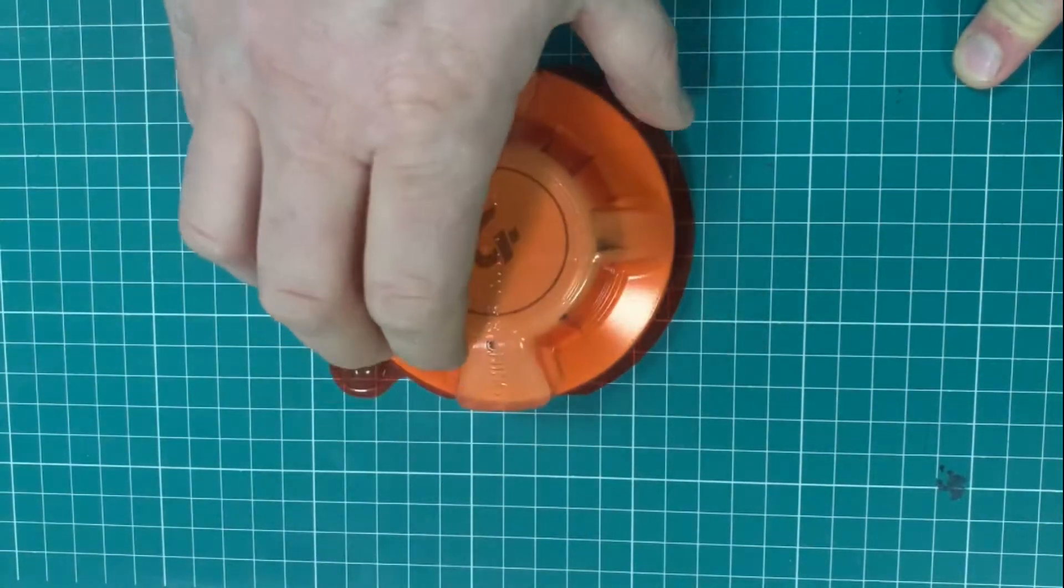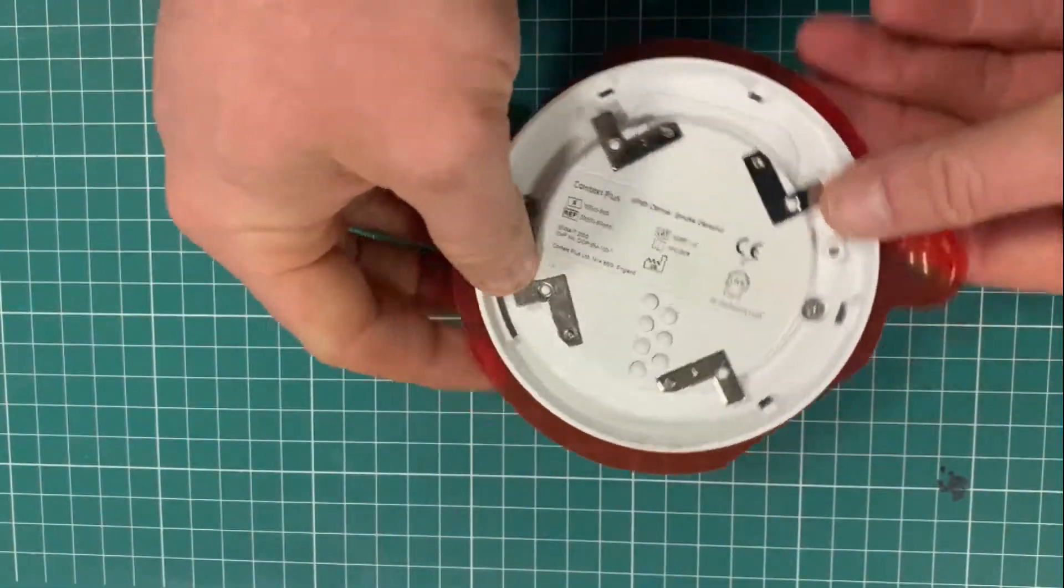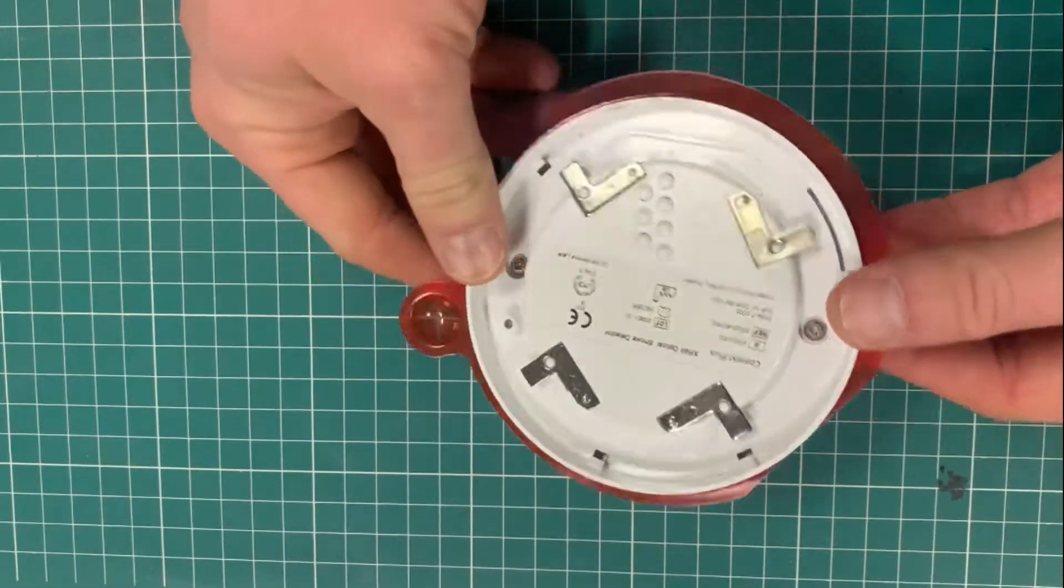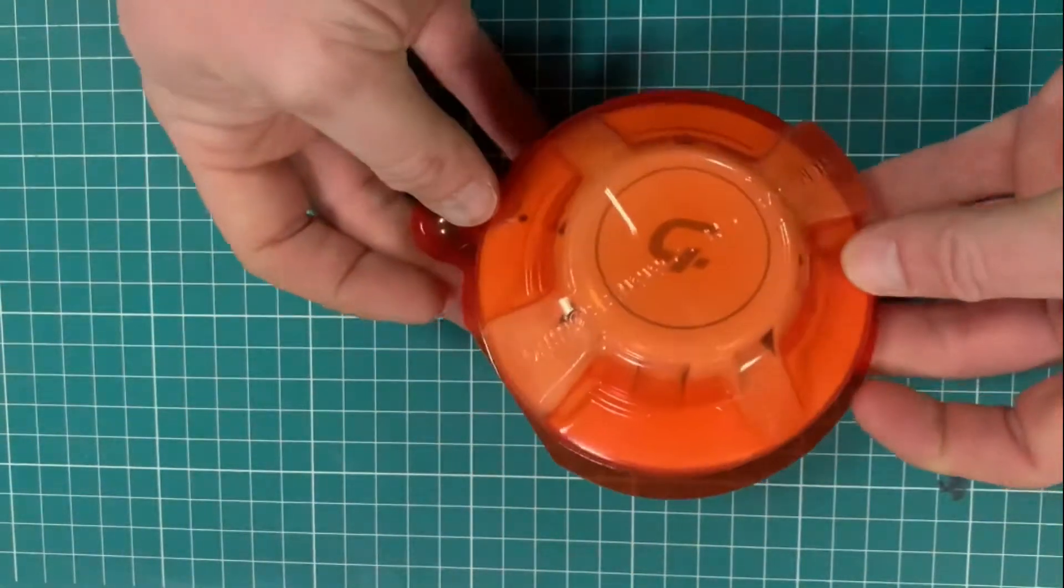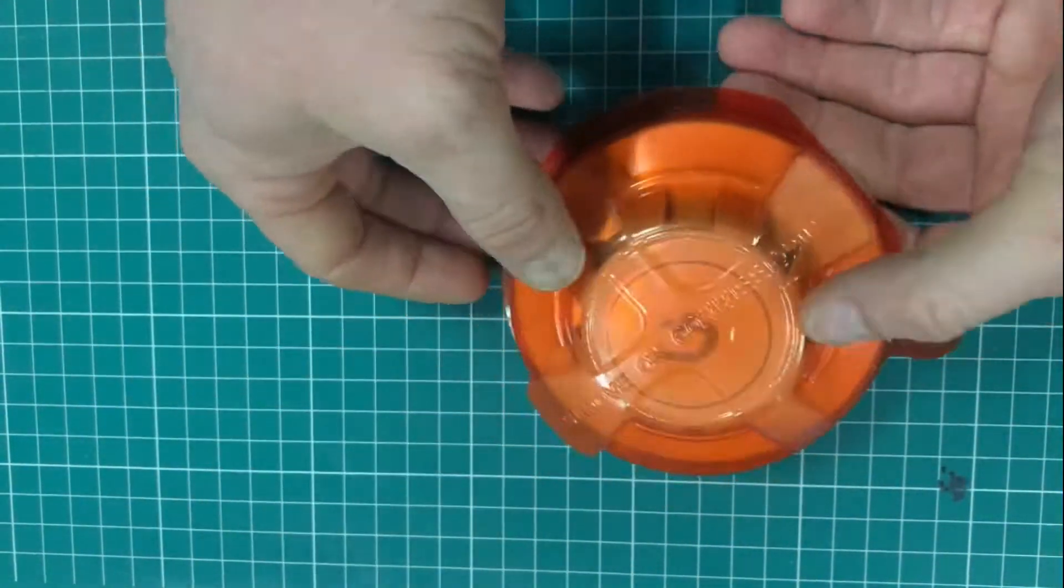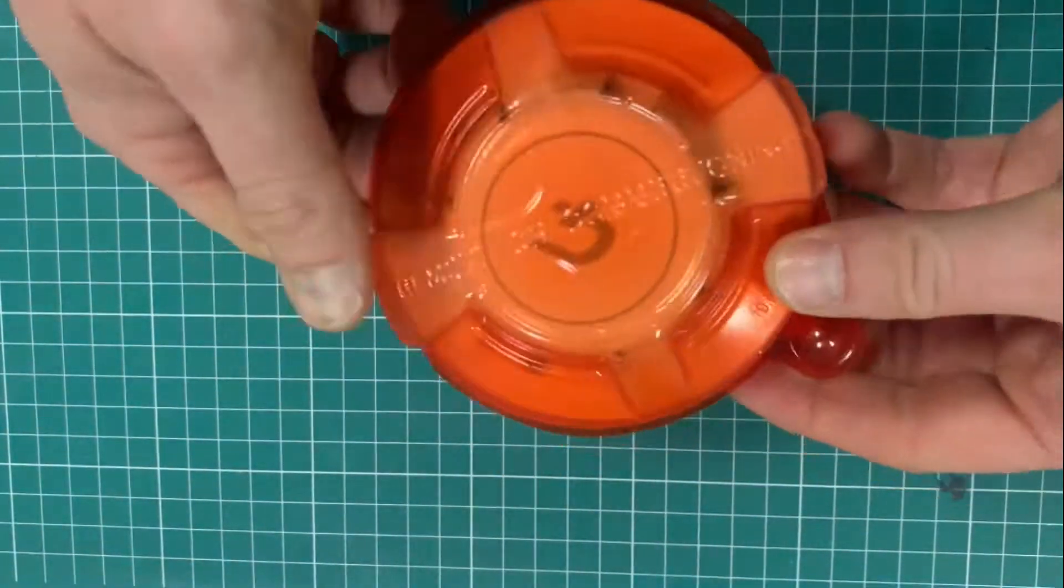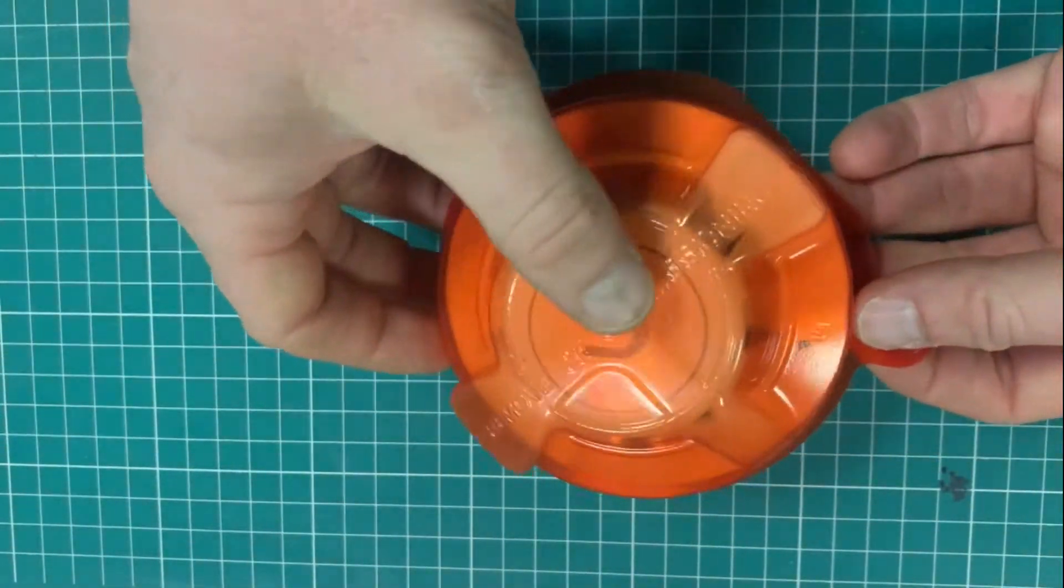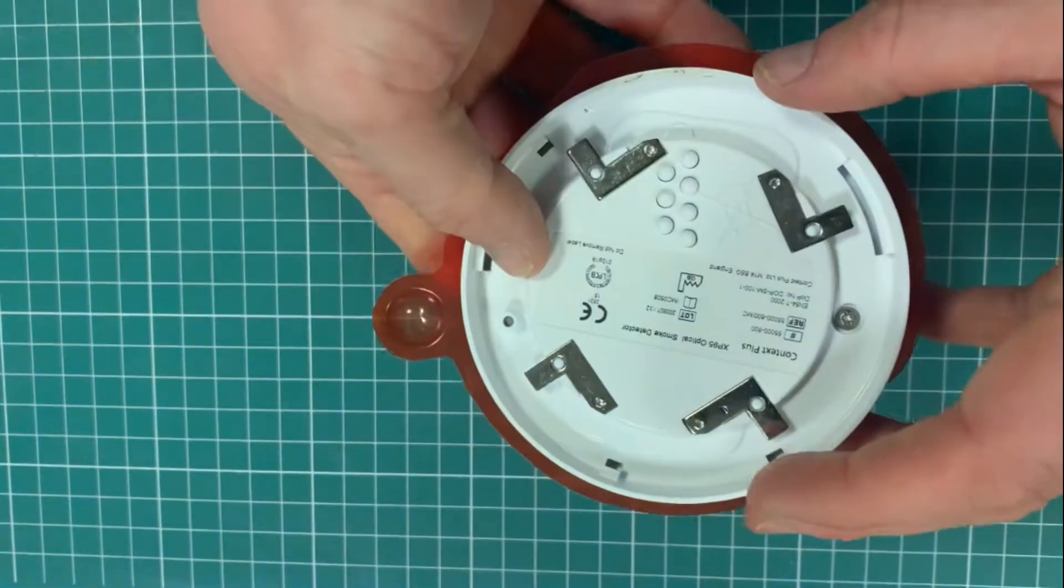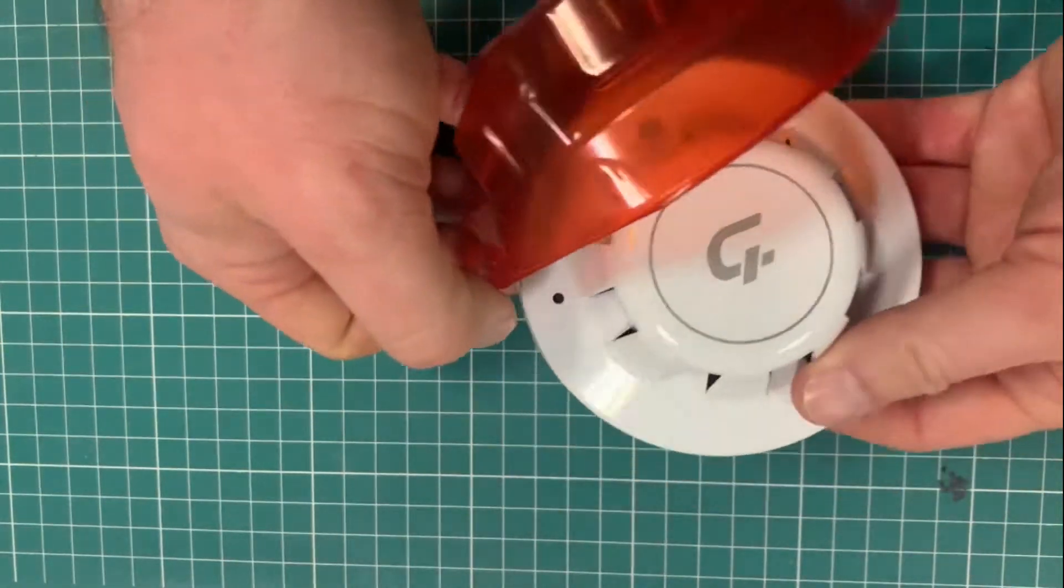Just want to do a very quick video of the Apollo XP 95 addressable smoke detector. This is the one that we typically use with our small-scale addressable systems here and we pair it nicely with the XFP one loop two loop systems. It's very popular, one of the world's biggest selling smoke detectors.